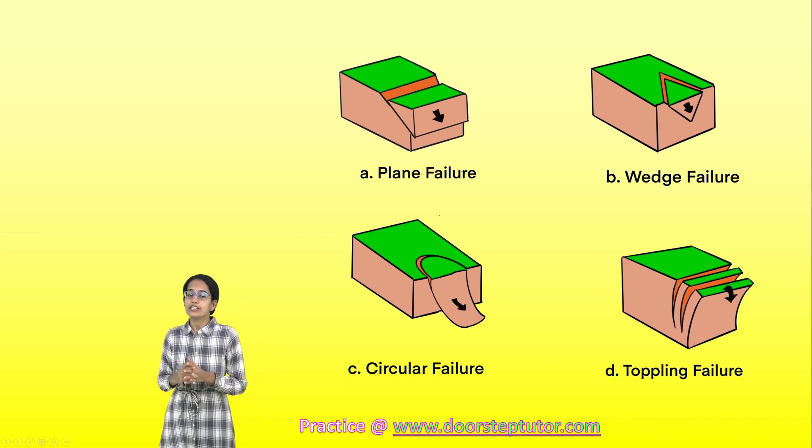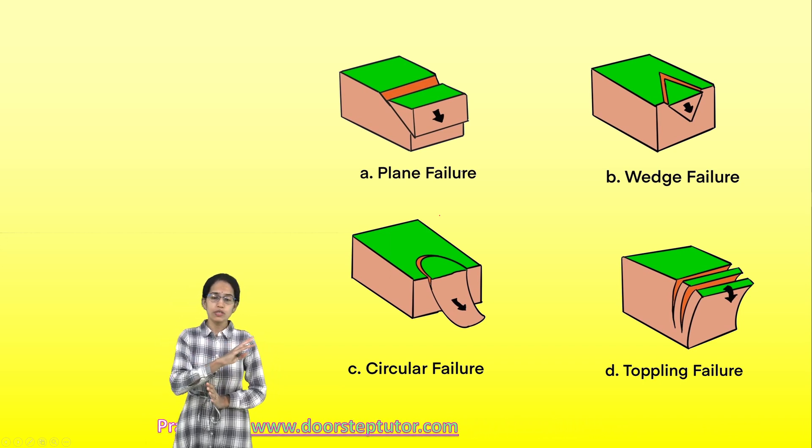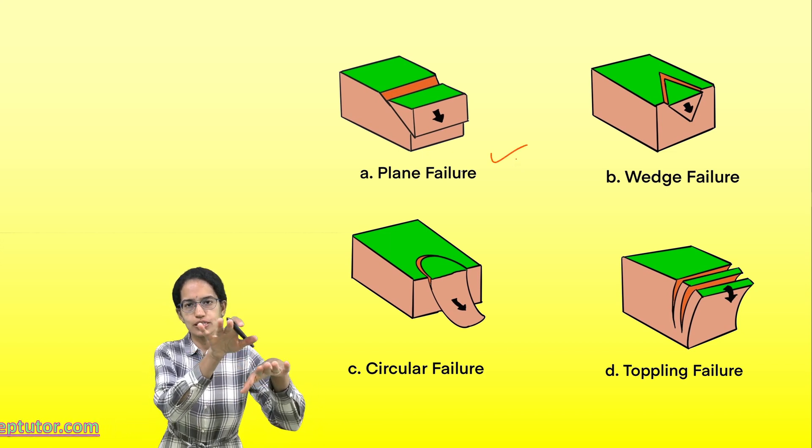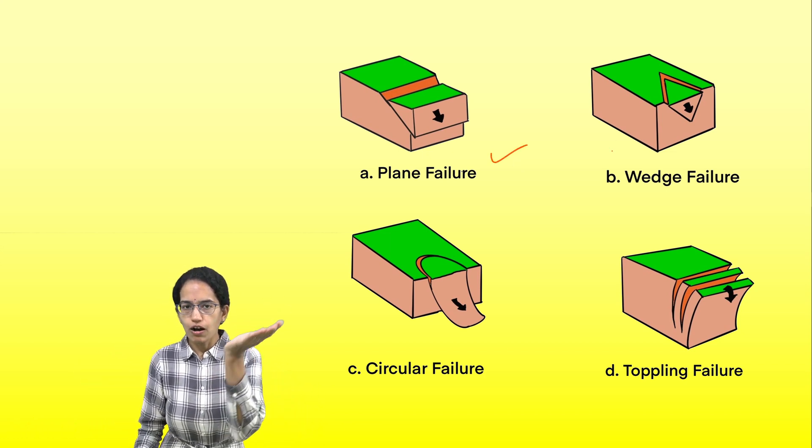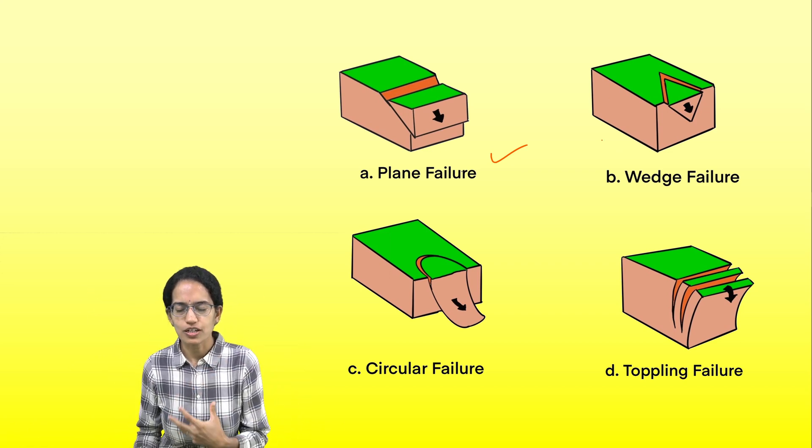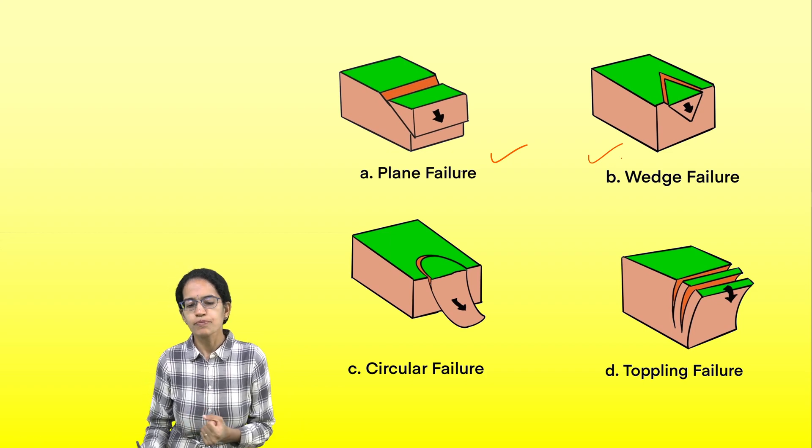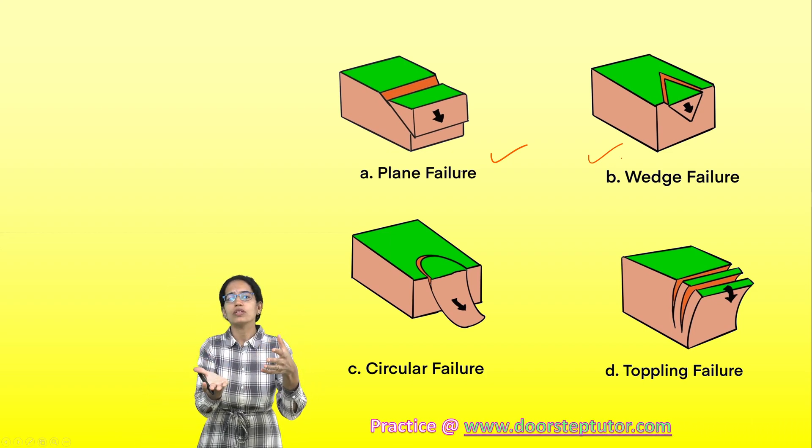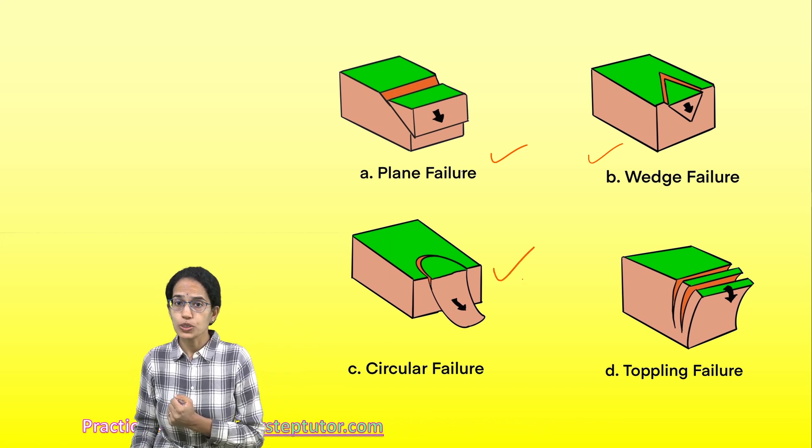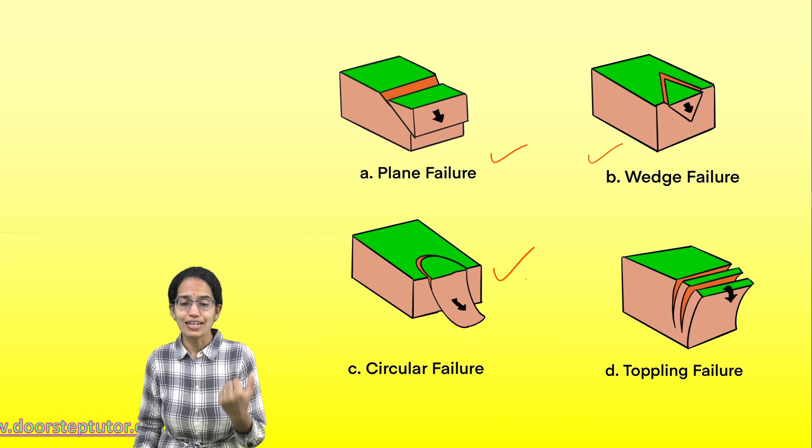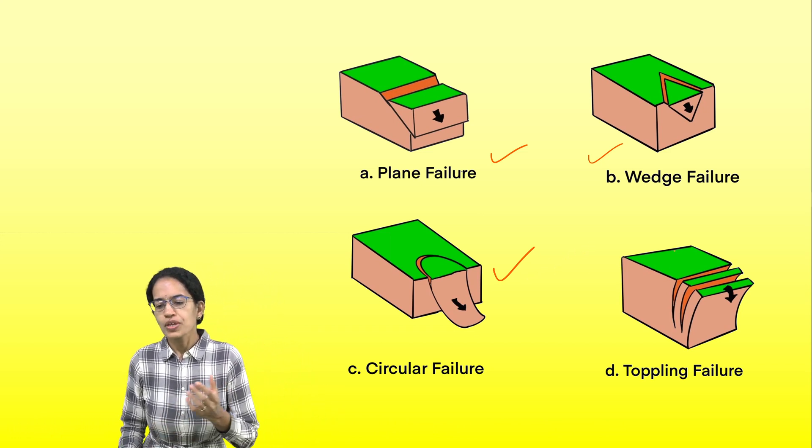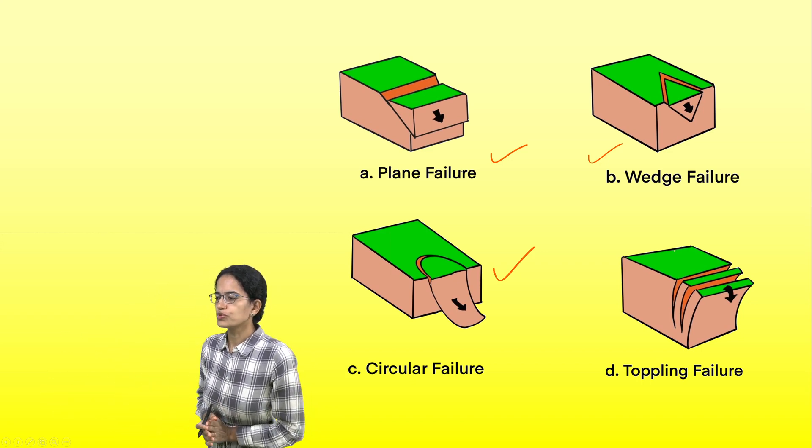When we talk about failures, there are four common types. One is plane failure, a simple plane that shifts. Wedge failure is a wedge-shaped structure that slips. Circular failure is when it rotates along its own axis and moves forward, also known as rotational failure or slip circle failure, as believed in the case of Silkyara tunnel. Finally, toppling is where the top layer moves out.